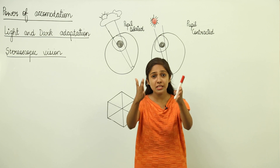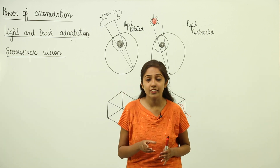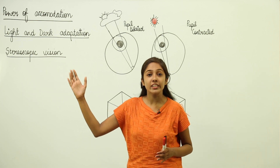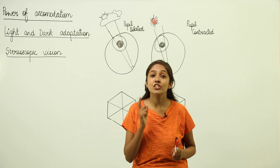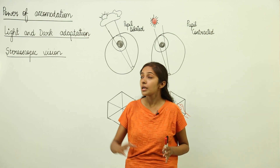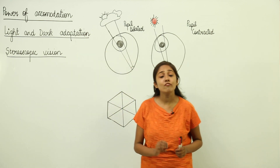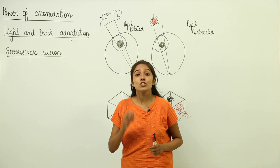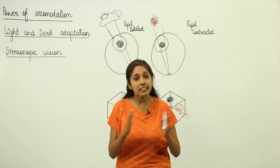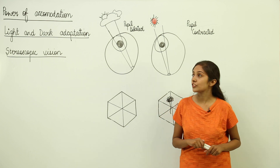You are able to see me because your eye lens is adjusting the focal length. When you look at a far away object, your eye lens is again adjusting the focal length. This ability to see nearby as well as far away objects clearly is known as the power of accommodation.